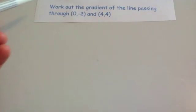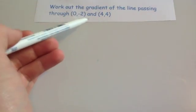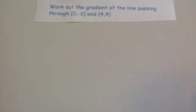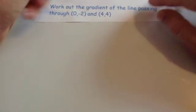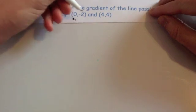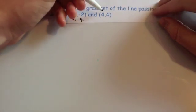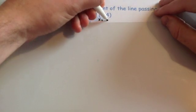We're going to work out the gradient of the line that passes through (0,-2) and (4,4). And this time we're going to do it without using a sketch. So this one is further to the left, so we could label it x1, y1. And this one then comes next, so x2, y2.